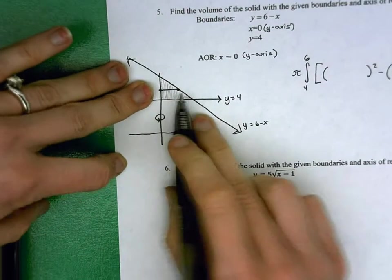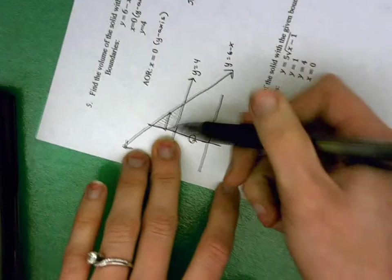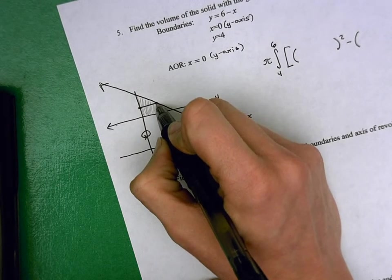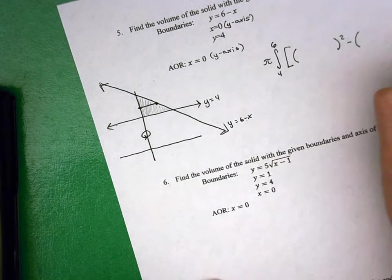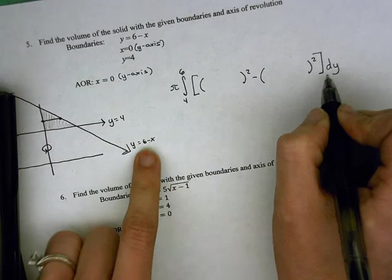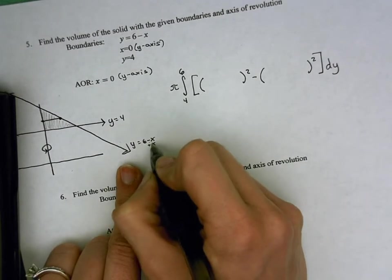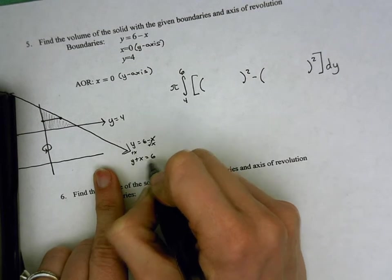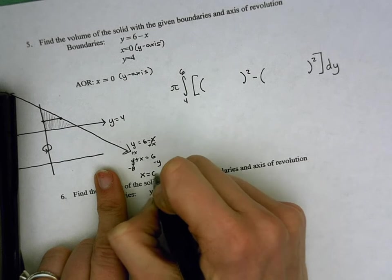Since we're looking at it sideways, it's technically right minus left, but again, it's this idea, above minus below. My above graph, this point here, is y equals 6 minus x, but I need it to be in terms of y. We're revolving around the y-axis, so I'm going to change this y equals 6 minus x into terms of y. I'm going to add this x over, so I get y plus x equals 6, and then subtract the y over. So I get x equals 6 minus y.